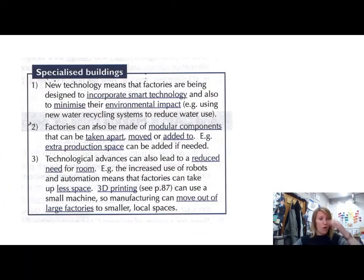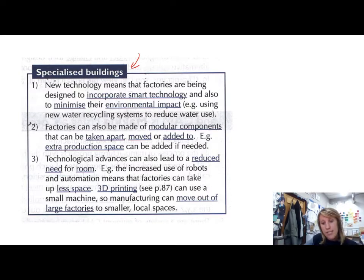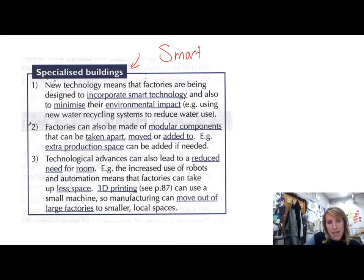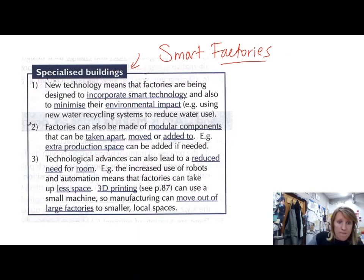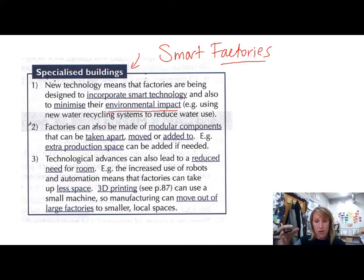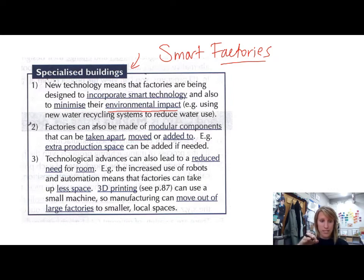The next thing we're going to cover in this revision video is specialised buildings in industry. Lots of factories and big players in industry are now starting to make things called smart factories. These tend to have the Internet of Things, and they try to reduce the environmental impact of the factory, because as you can imagine, factories generate a lot of waste — energy can be wasted, pollution, waste materials, all sorts of different things. By thinking about smart factories, you're trying to reduce the environmental impact of your business.